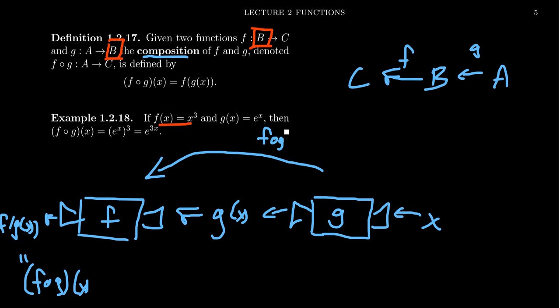A simple example of such a thing, take F of X equals X cubed and G of X equals E to the X. In this situation, F was a function from the real numbers to the real numbers. G was a function from the real numbers to the real numbers, even though the output will never be negative for E to the X there. And so if we put these things together, we put G inside of F. That means we're going to take E to the X and we're going to cube that. And by exponent rules, you get E to the 3X.